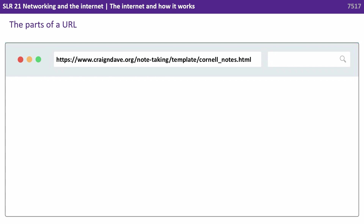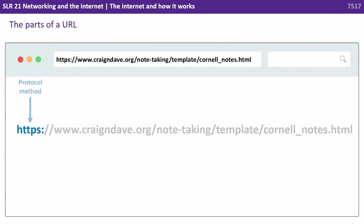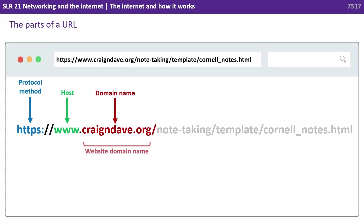The URL has a number of different parts. We have the bit at the start — this is the protocol, for example, HTTPS. We then have the host section, followed by the domain name. So here, craiganddave.org. When we add this to the host, we have what's called a fully qualified domain name: www.craiganddave.org.